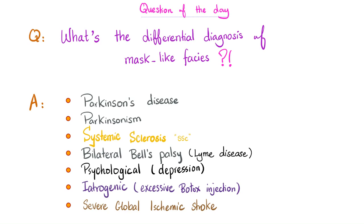Depressed people feel devoid of emotion — they feel empty, they feel nothing. They'll tell you, 'Doctor, I wish I were sad; at least that would be a feeling.' Iatrogenic causes such as people who excessively inject Botox into their skin. Severe global ischemic stroke — if it's focal it's usually unilateral, but if you want bilateral mask-like faces it's going to be global and severe, where the watershed areas are toast.